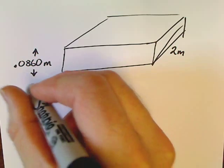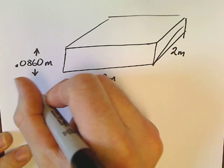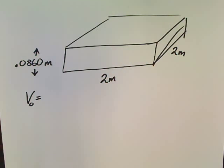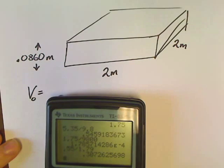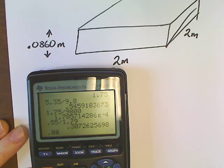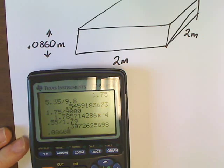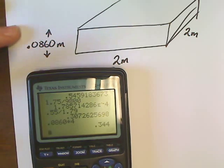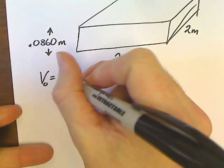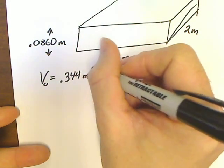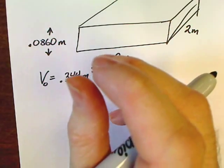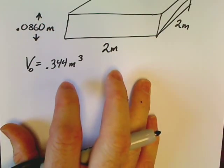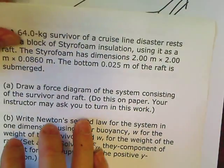Why would a problem give you all this information, length, width, and height? Let's go ahead and find the volume of the object. So we got 0.0860 times 2 times 2, so my volume is 0.344 meters cubed.